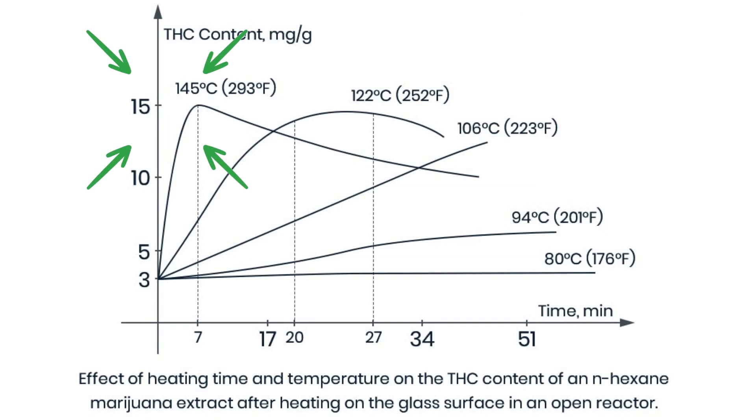However, this study was flawed as it was heated on an open glass surface exposed to air, and it was an extremely low THC percentage to begin with. As you can see in this chart, there's less than 15 milligrams of THC per gram at the peak of the experiment. For a hexane concentrate or any concentrate, there's a very low THC percentage — less than 1.5% to begin with. That's less than starting with bud.